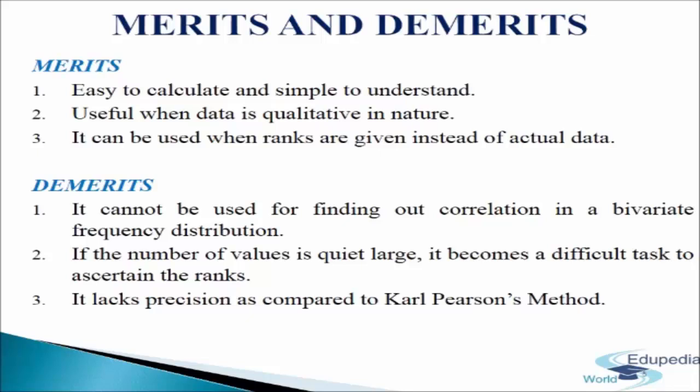Demerits: First, the rank method cannot be used for finding correlation in a bivariate grouped frequency distribution. Second, if the number of values is quite large, it becomes difficult to ascertain the ranks and differences — that is why it is advisable to use this method only when the number of observations is less than 30. Third, this method lacks precision compared to Karl Pearson's method because it uses ranks instead of the original values.